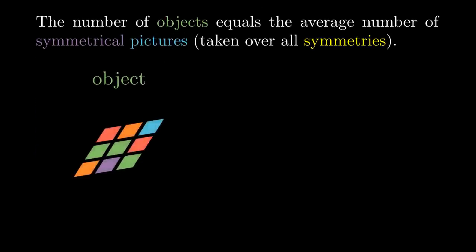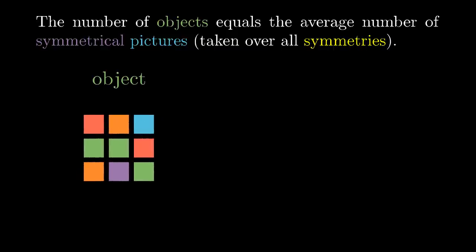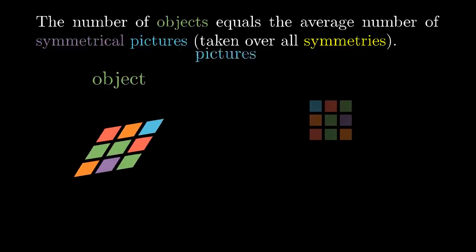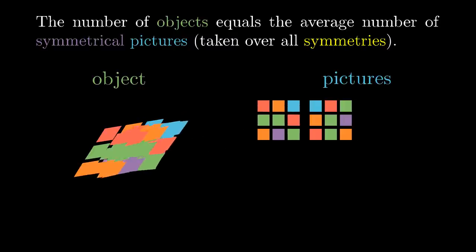And don't worry if you still don't get what it means, we are just going to explain it on the example with the colored tables. An object is what we want to count, that is a colored table 3x3 in which we have forgotten its orientation, so differently rotated or flipped tables correspond to the same object. A picture is a table with a fixed orientation, so there are typically multiple pictures corresponding to a single object.